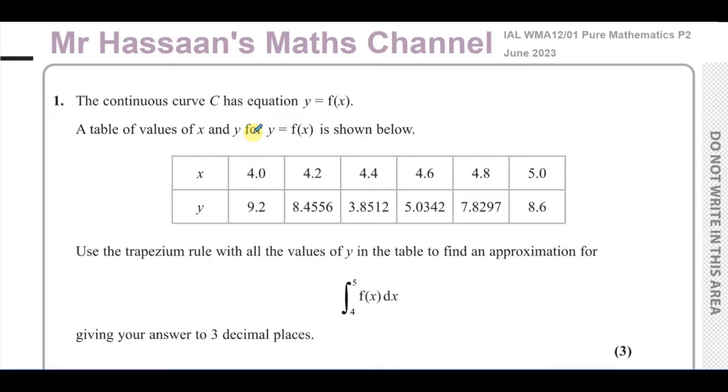As I've mentioned many times when I go through these papers, I don't just read out the mark scheme. I try to explain what's behind the topic so people understand, and I try and look at some of the common mistakes that people make. Now, here we have an equation of a curve. The equation is not given, y equals f of x. We don't know what the equation is, but we're given some coordinates of some points on the curve. So when x is 4, y is 9.2, x is 4.2, y is 8.4556, and so on. And you can see the x values are increasing in equal intervals of 0.2.